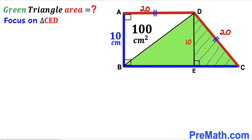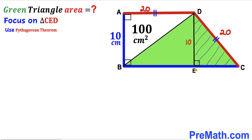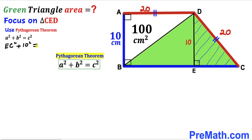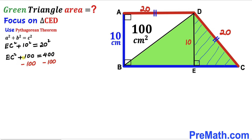Now we focus on right triangle CED. Side CE is unknown, so we will calculate it using the Pythagorean theorem: a² + b² = c². For this triangle, the hypotenuse CD is 20 centimeters and the leg DE is 10 centimeters. Filling in: CE² + 10² = 20².